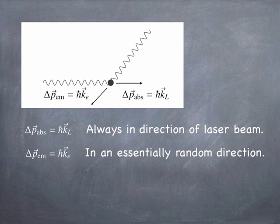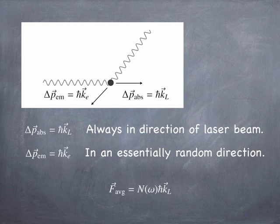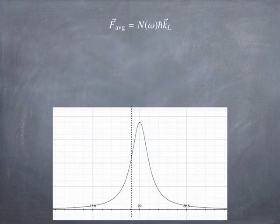And you'd say, well, that's interesting. It kind of pushes on the ion, but how does it cool? The thing is, the average force of this radiation pressure is a function of omega. So, it's the momentum of a single photon times the rate at which these spontaneous transitions occur.